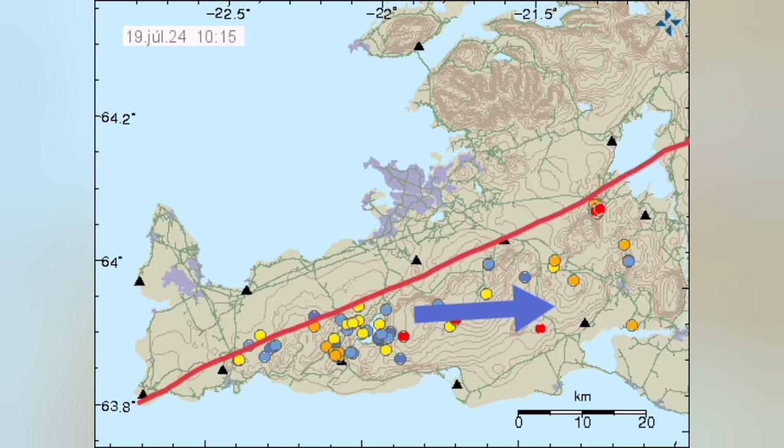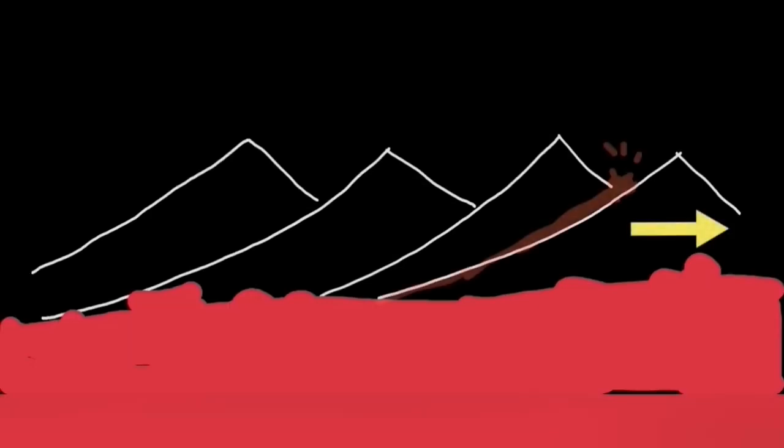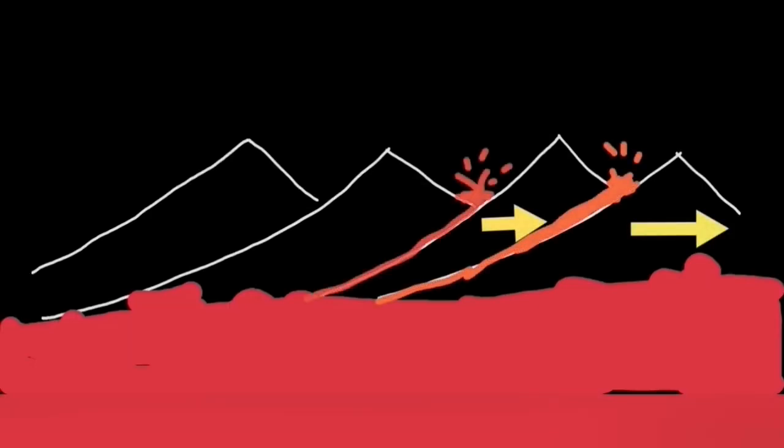As it moves and pulls, it practically rips the earth's crust, creating what we call a rift. This rift is the location of these eruptions. Over time, as the rift moves and ripping progresses from one point to the next, eruptions happen in sequence — from the first to the second to the third.